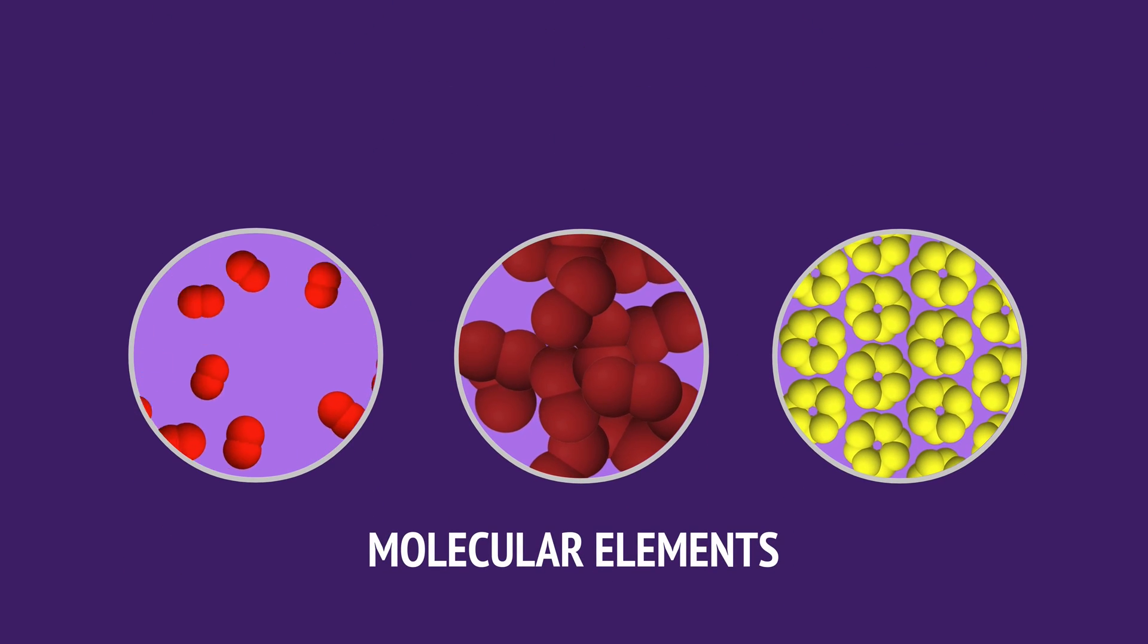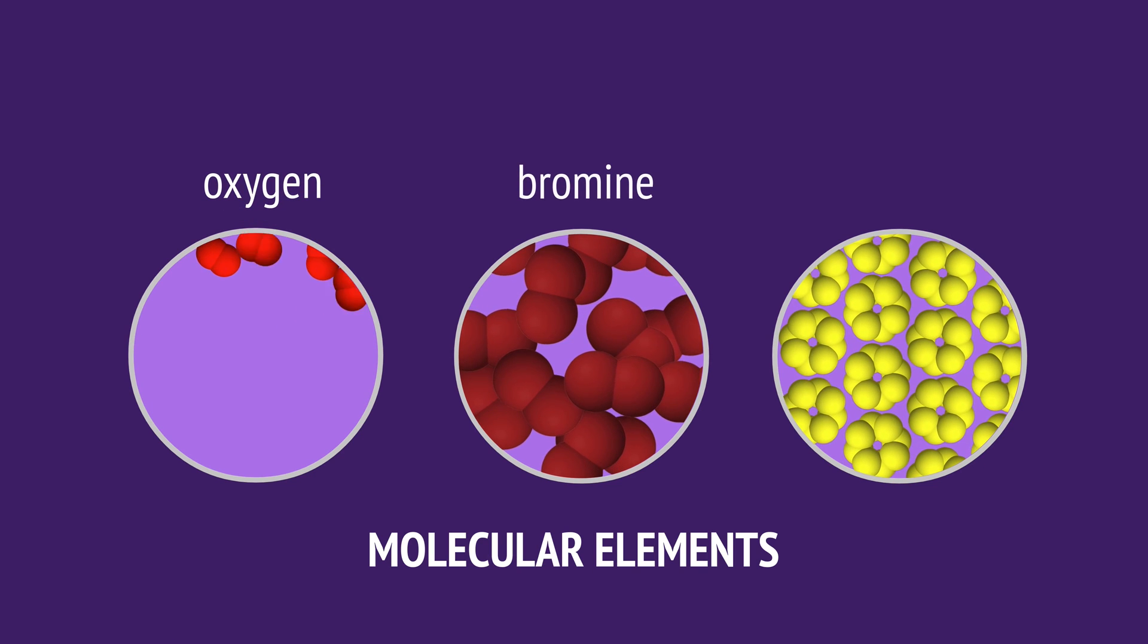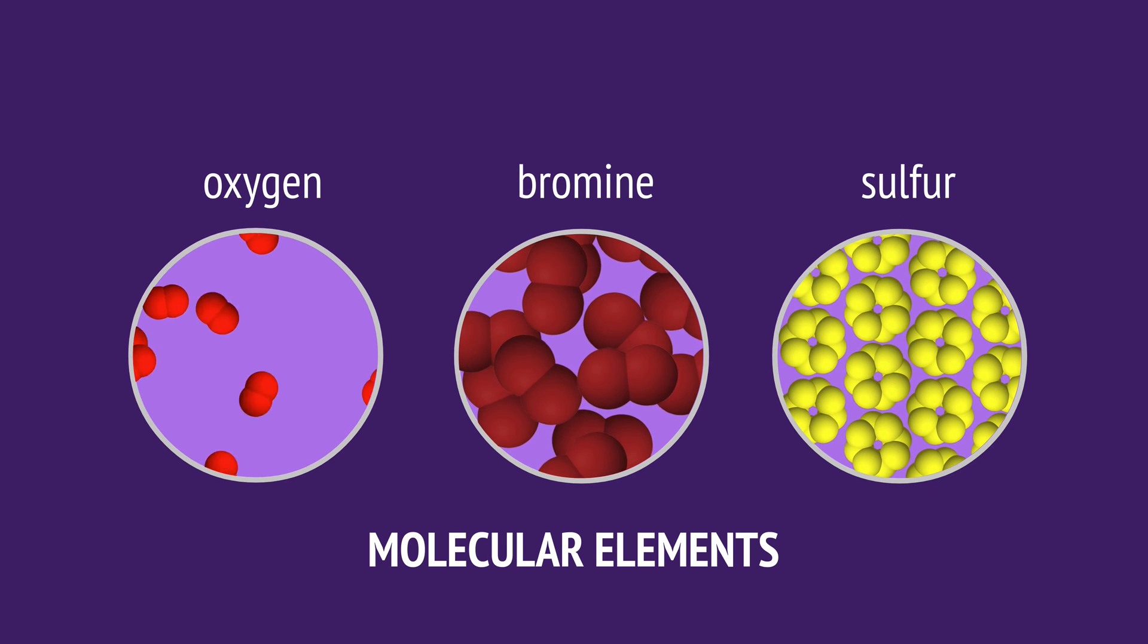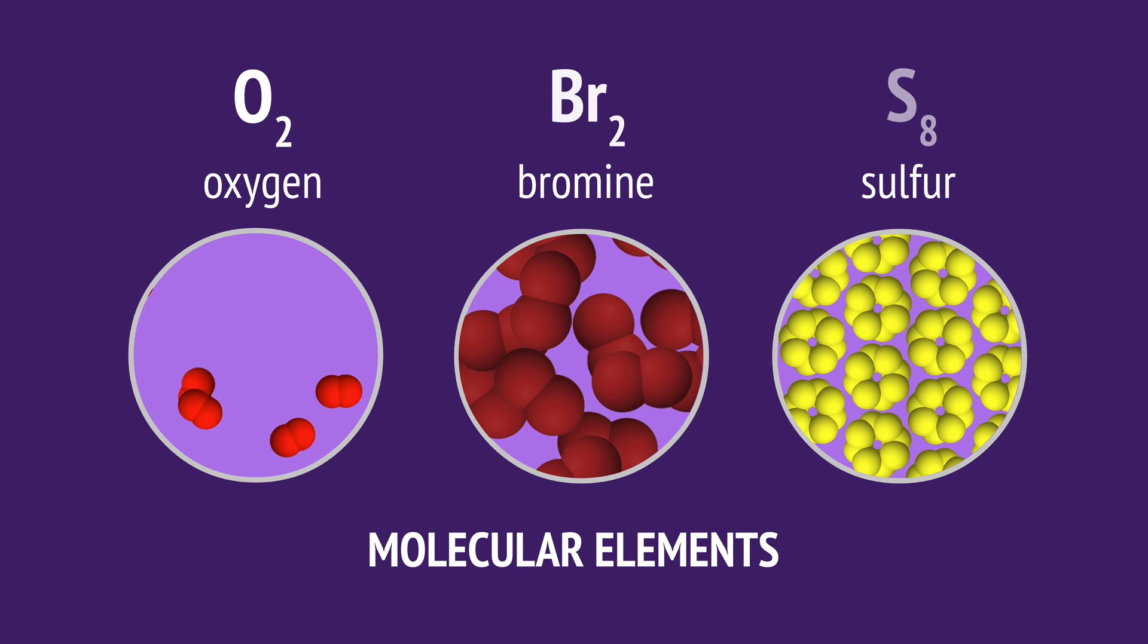Molecular elements have molecules as their base unit, groups of atoms bonded together, like oxygen, bromine, and sulfur. We often use a subscript on these symbols to show the number of atoms in the molecule.